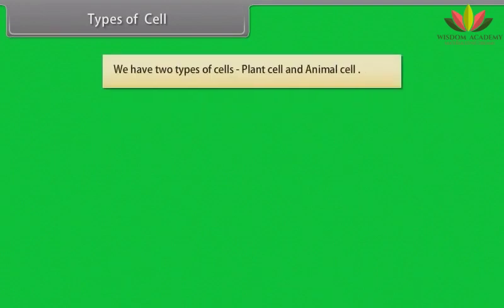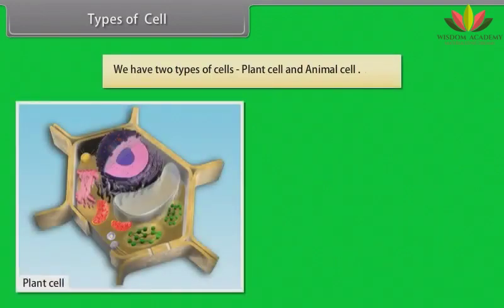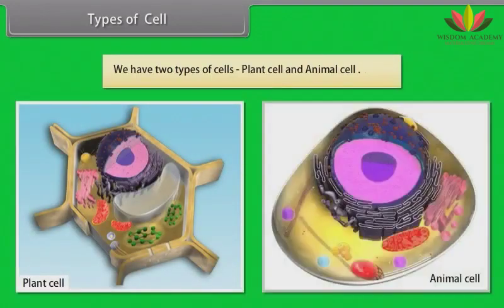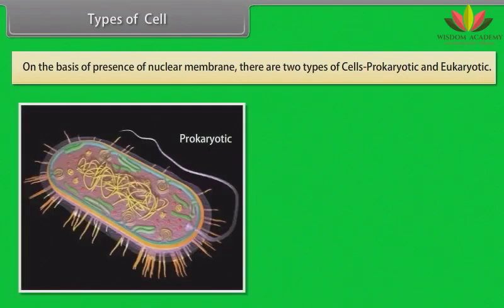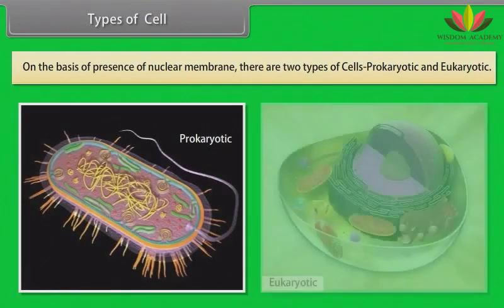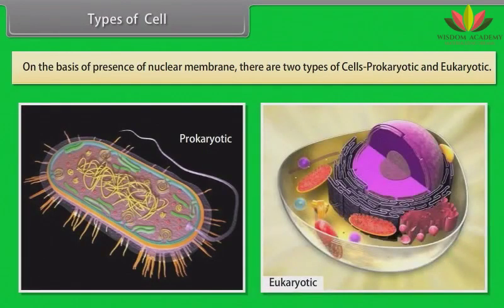We have two types of cells: plant cell and animal cell. On the basis of presence of nuclear membrane, there are two types of cells: prokaryotic and eukaryotic.